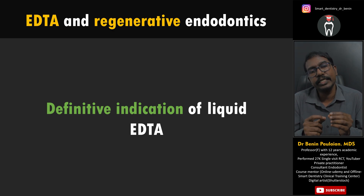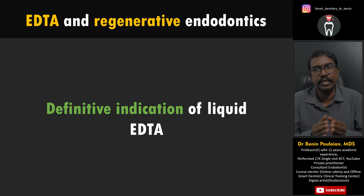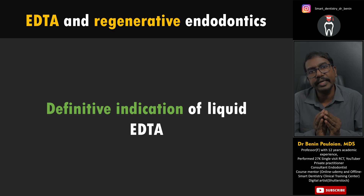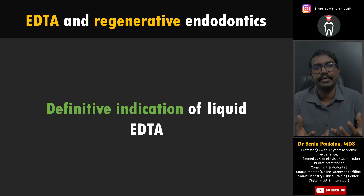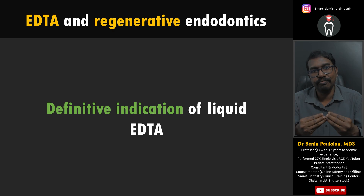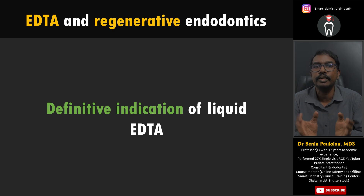If you are practicing regenerative endodontic procedures like pulp revascularization or pulp revitalization procedures, the EDTA in liquid form has a real advantage. The liquid form of EDTA can extract and enhance growth factors from the dentine and nearby substructures so that the growth factor content will be more, enhancing the ability of the pulp to get revascularized. If you are doing revascularization procedures, the last chemical you must use should be the liquid form of EDTA.